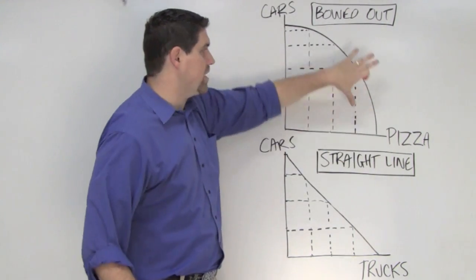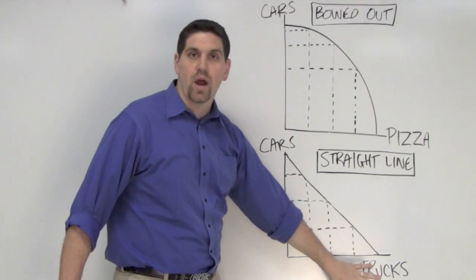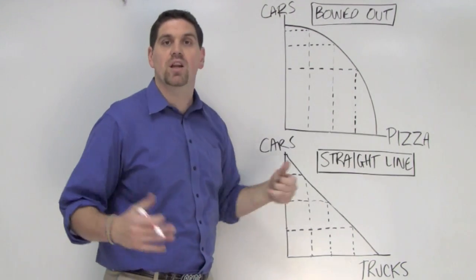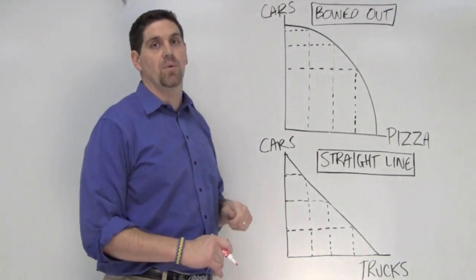Cars and pizza when it's bowed out, and cars and trucks. Notice that the resources to produce cars and pizza are completely different. They are not easily adaptable.